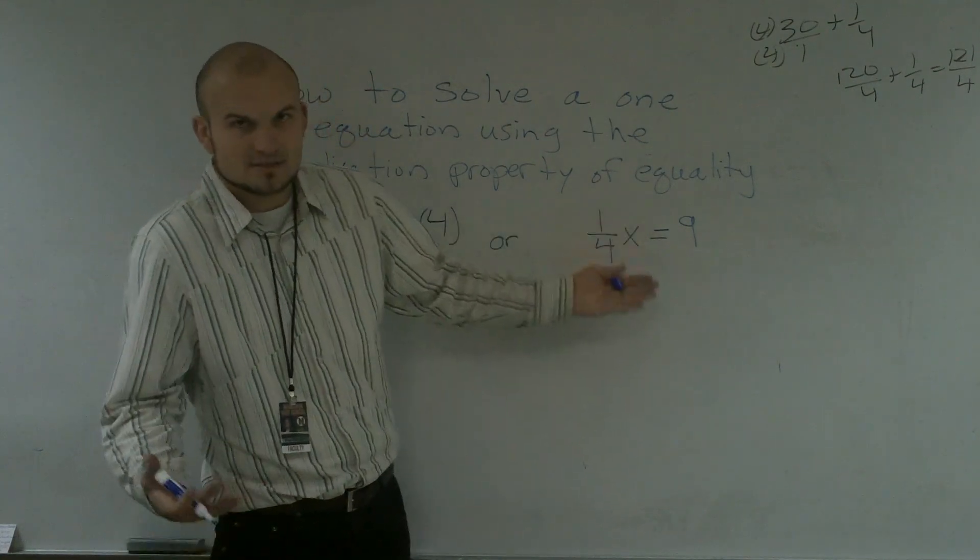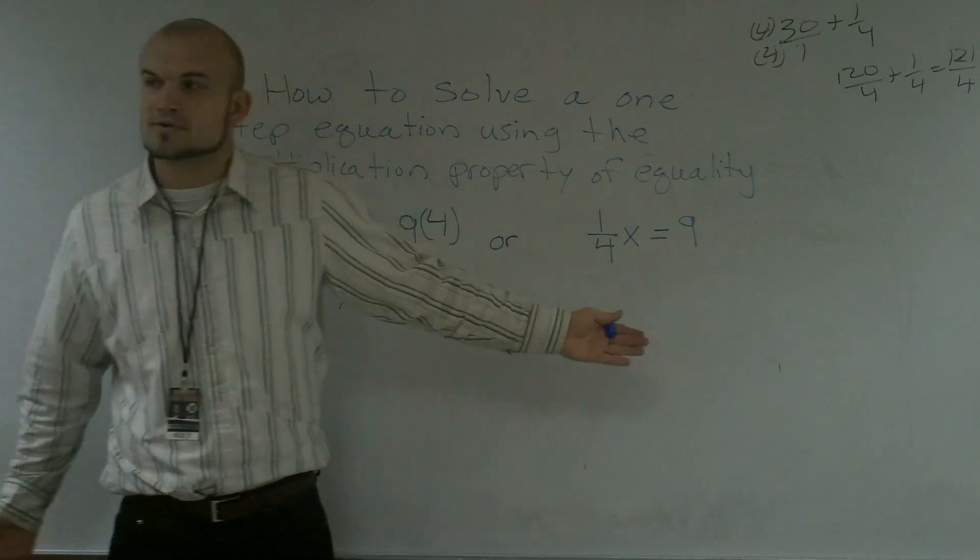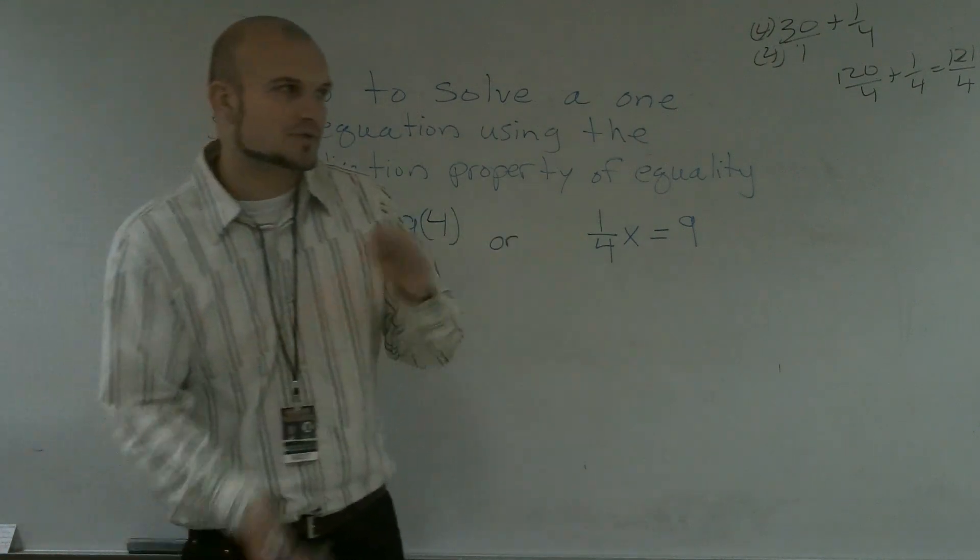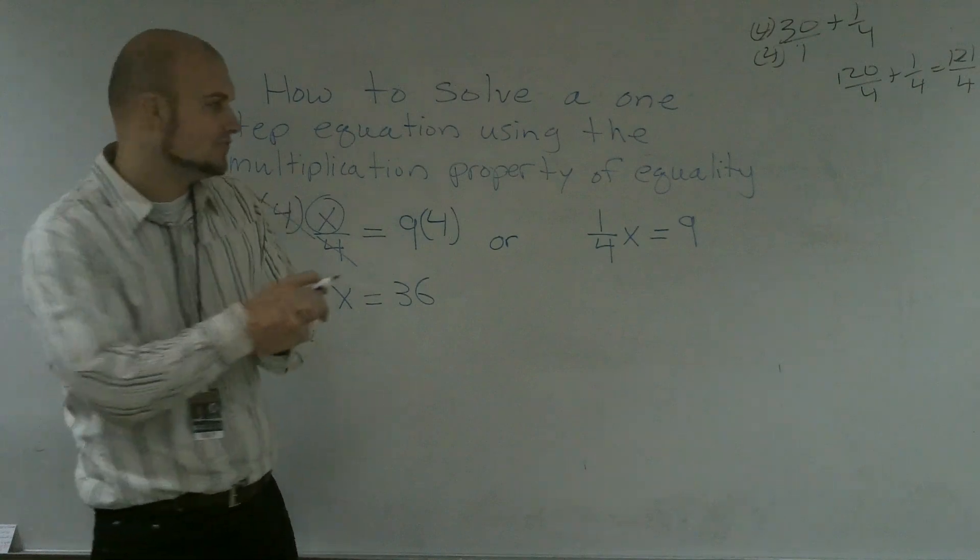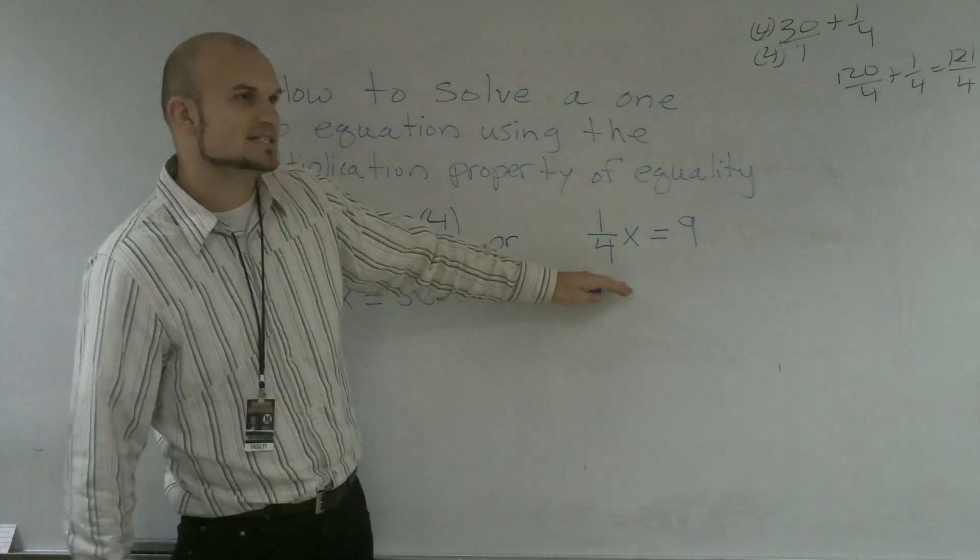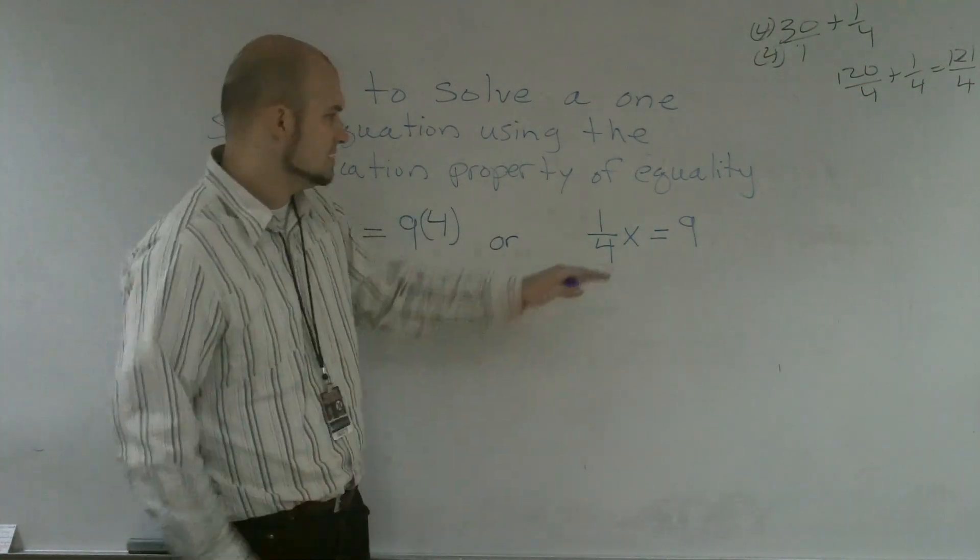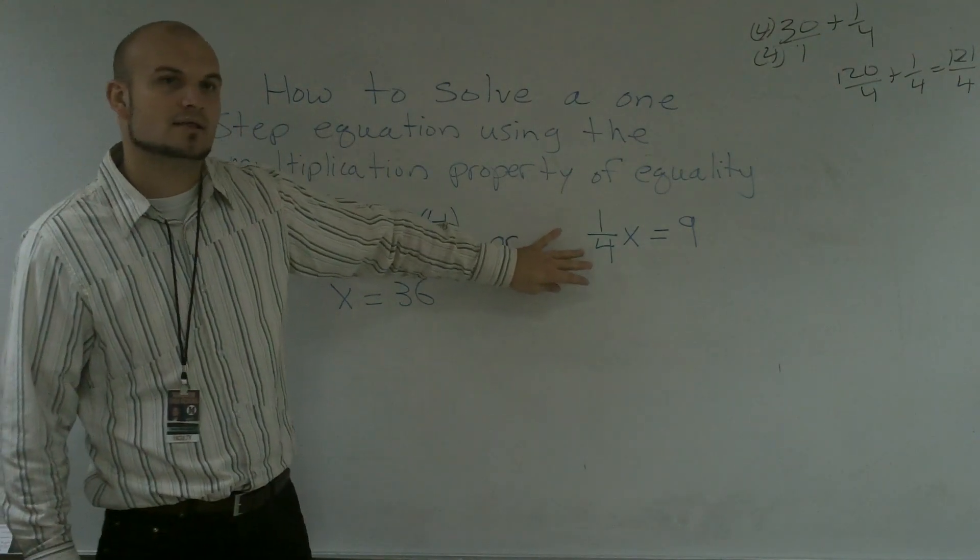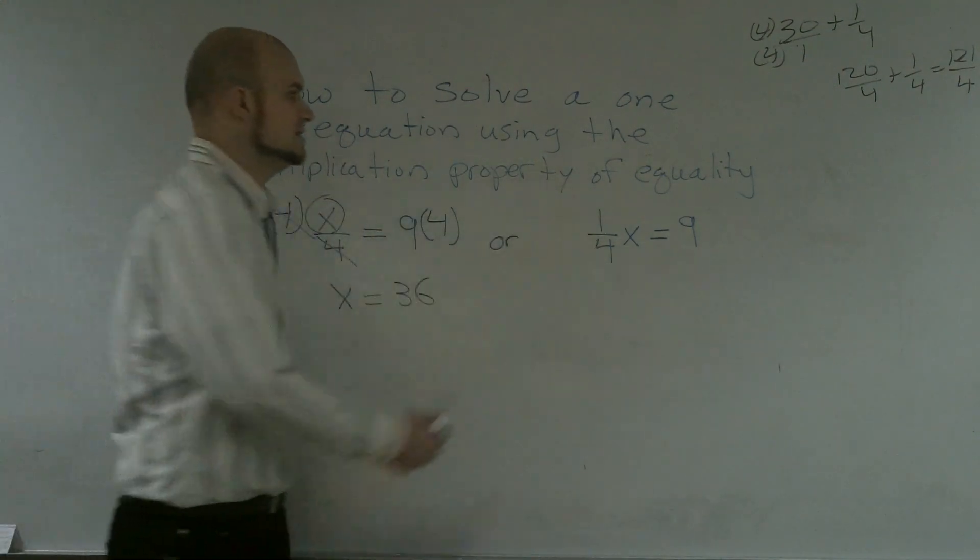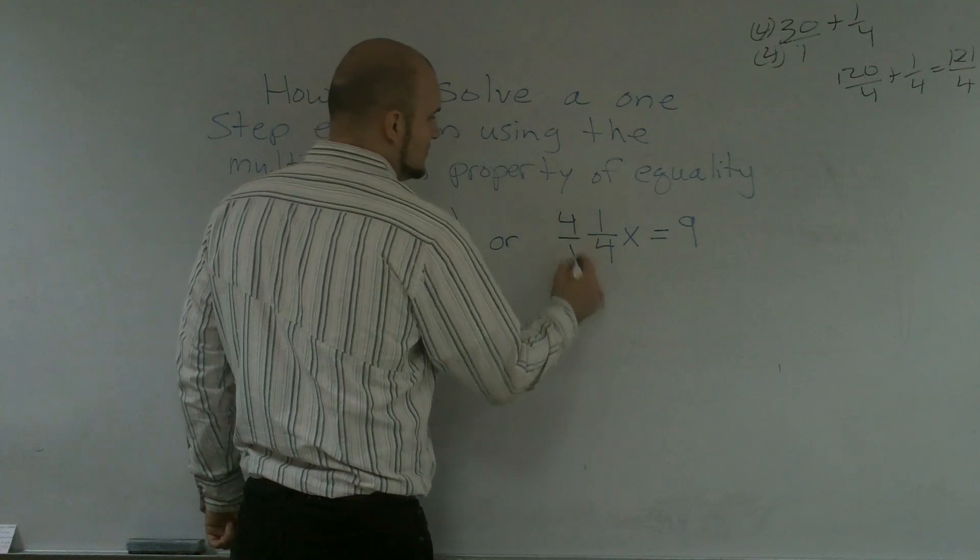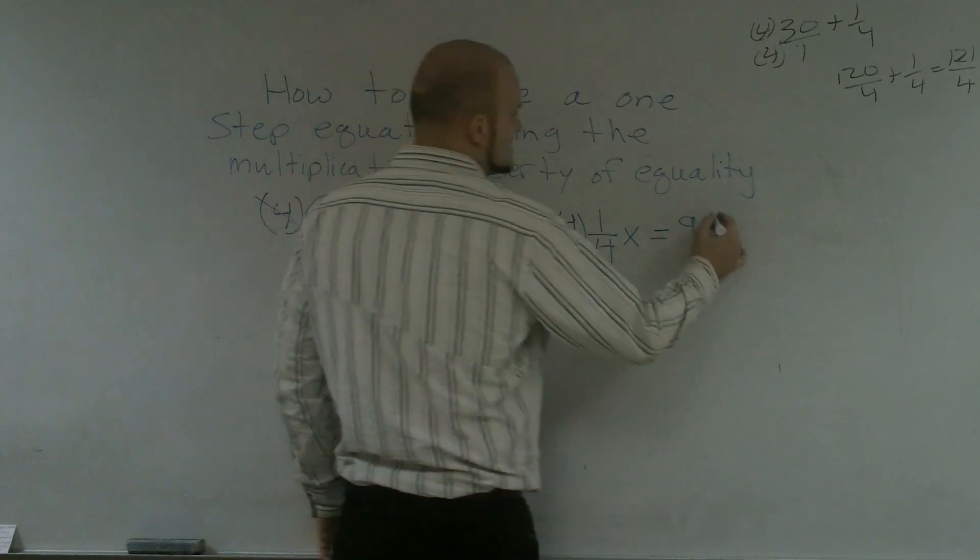Now, a lot of times we say, all right, that could be the same as dividing by 1 fourth. And when we divide by 1 fourth, we have to go and flip it to get our reciprocal. So kind of a shortcut is if I multiply this by the reciprocal, I'm going to go and get 1 anyways. So if I multiply it by the reciprocal on both sides...